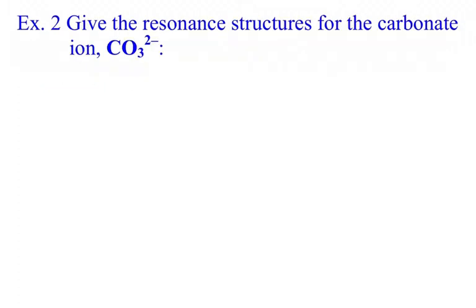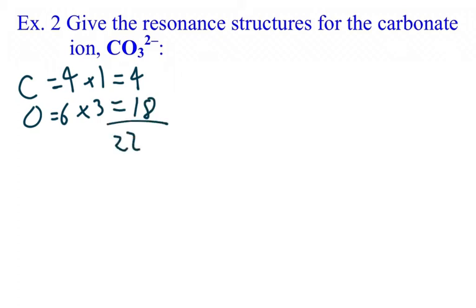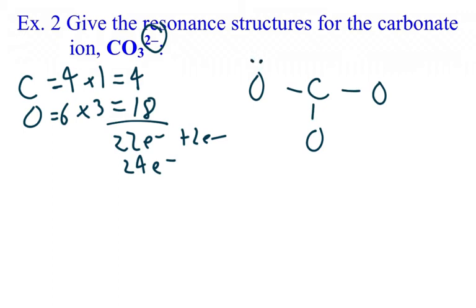Let's take a look at another example: the carbonate ion. Carbon has four valence electrons — there's only one carbon. Oxygen has six and there are three, so that takes us to 18. Notice there's a minus two charge, so you're going to add two electrons, making our total 24. When we draw this up, we're going to put carbon in the middle, put our three oxygens, connect everybody to the central atom, and give everybody an octet — always starting with the peripheral elements. When you count this up, you'll notice that there are 26 electrons, so we're going to have to remove two and bring it down to 24.